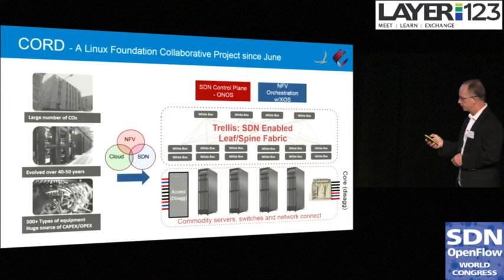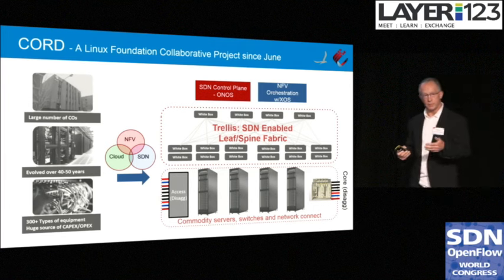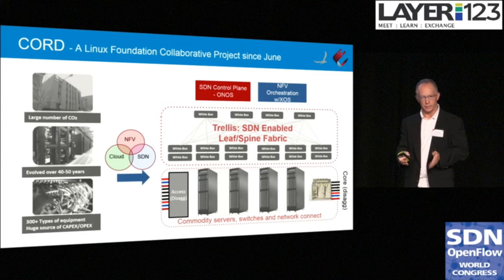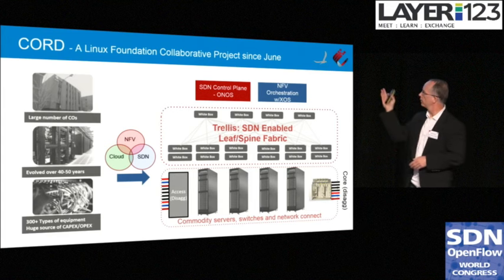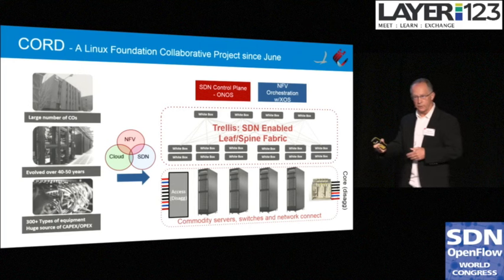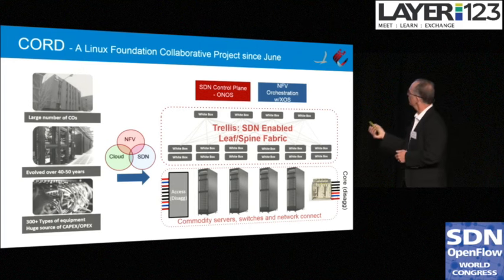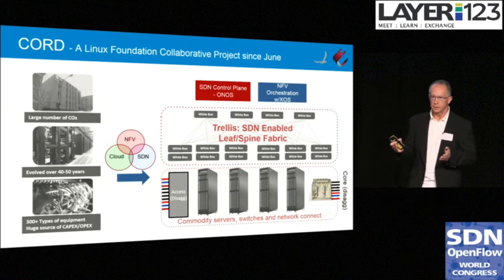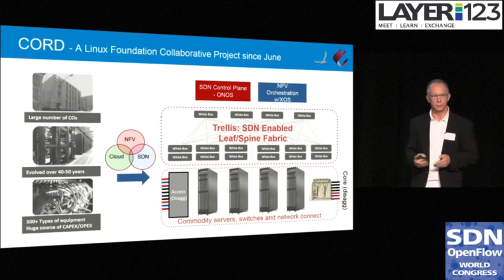CORD's architecture starts first with picking some type of access — we started with residential optical access. A big part of it is disaggregating it, not just taking the vertically integrated expensive boxes as they are, but asking where the functions belong and how to commoditize that access. Running what used to run on those vertically integrated devices for control as VNFs on servers. Those servers are interconnected in a data center-like leaf-spine fabric called Trellis, constructed of white box switches — an open source project done in collaboration with the Open Network Foundation.